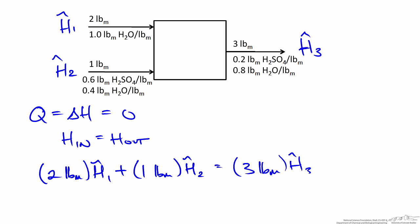Our energy balance changes as follows. On the inlet side, the enthalpy is the sum of the enthalpies of each stream, which can be written as 2 pounds times the specific enthalpy of stream 1, H1, plus 1 pound times the specific enthalpy of the second stream, and that has to equal 3 pounds times H3 on the outlet.